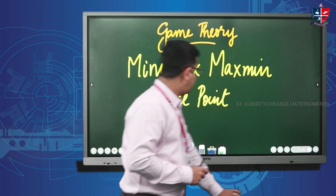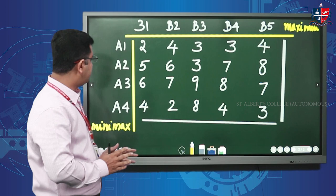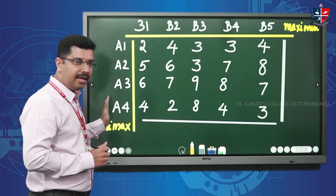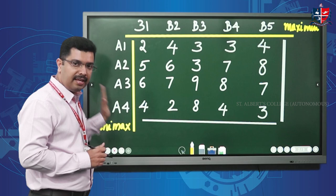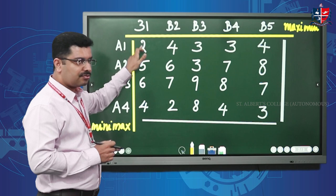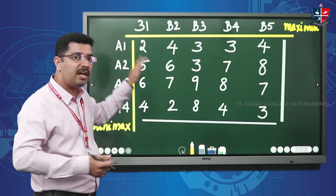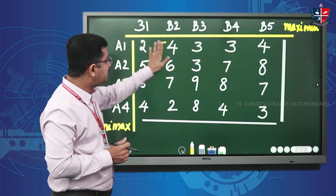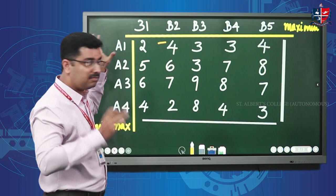Here we have a payoff matrix. A payoff matrix is always written in advantage of Player 1. We have two players: Player A and Player B. This payoff matrix is written in advantage of Player A. When Player A takes strategy A1 and Player B1 takes another strategy, the positive value is of advantage to Player A.